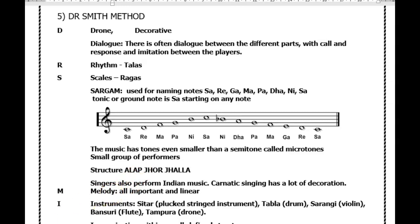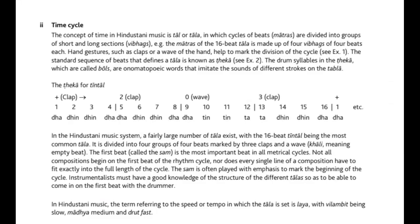Now let's go to the rhythm — the time cycle. The concept of time in Hindustani music is tal or tala, in which cycles of beats called matras are divided into groups of short and long sections called vibhags. The matras of the 16-beat tala are made up of four vibhags of four beats each. Hand gestures such as claps or a wave of the hand help to mark the division of the cycle.